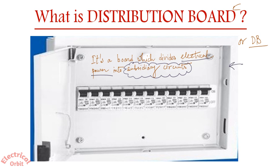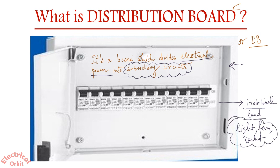What is a subsidiary circuit? Suppose this is the distribution board — from here you want to take the output power to your individual loads. Individual loads include your lights, fans, sockets, or any other electrical loads. To bring that power to the loads you have to go through some circuits or wiring.